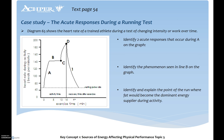Here's a case study looking at acute responses during a running test. This diagram shows the heart rate of a trained athlete during a test of changing intensity over time. From the start of the test we go from around 60 beats per minute up to 140 — that first part representing the oxygen deficit stage. At point B we're looking at a steady state where oxygen needs are meeting oxygen demands. From C to D we can see a real spike in activity.